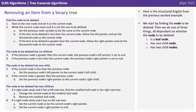Here is the structured English from the previous example. We start by finding the node to be deleted, then we do one of three things — all dependent on whether the node to be deleted is a leaf node, has one child, or has two child nodes.